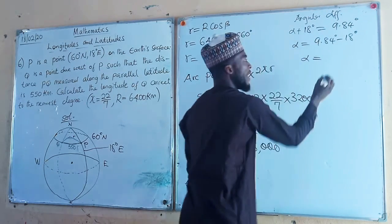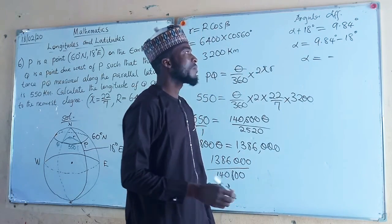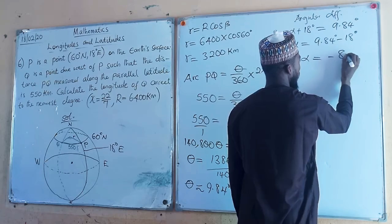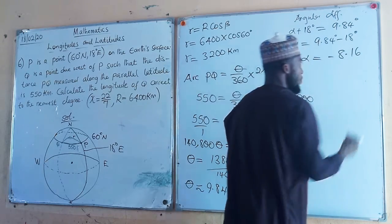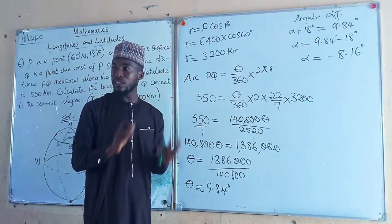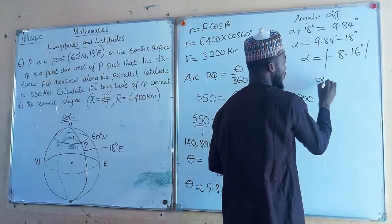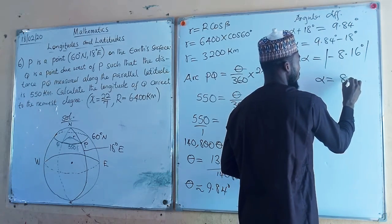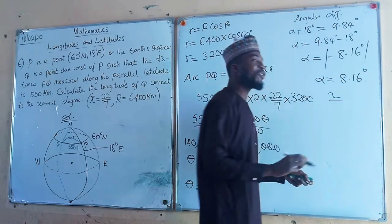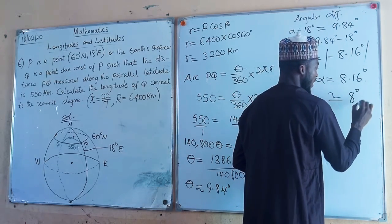Alpha equals 9.84 degrees minus 80 degrees, which gives a negative value. But we know that we don't have a negative angle — you have to take the absolute value. Therefore, taking the absolute value, theta comes out to approximately 8.16 degrees. Rounding to the nearest degree, the angular difference is 8 degrees.